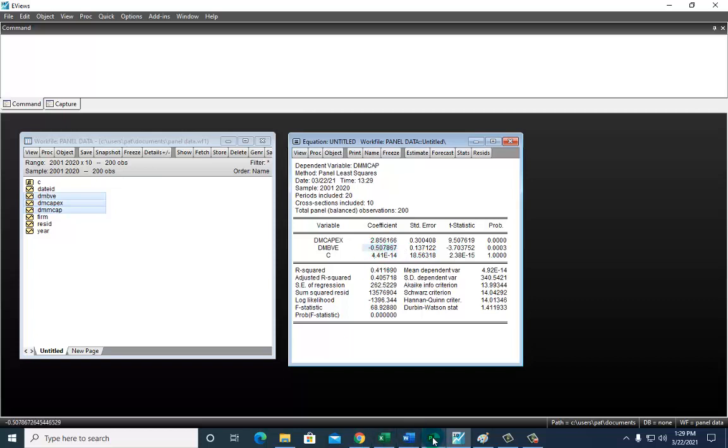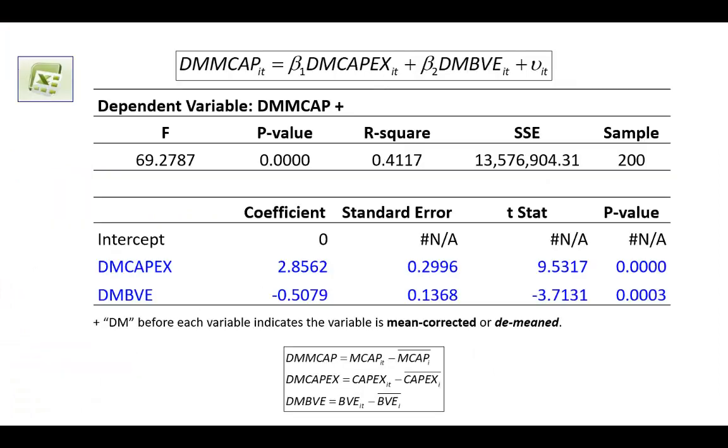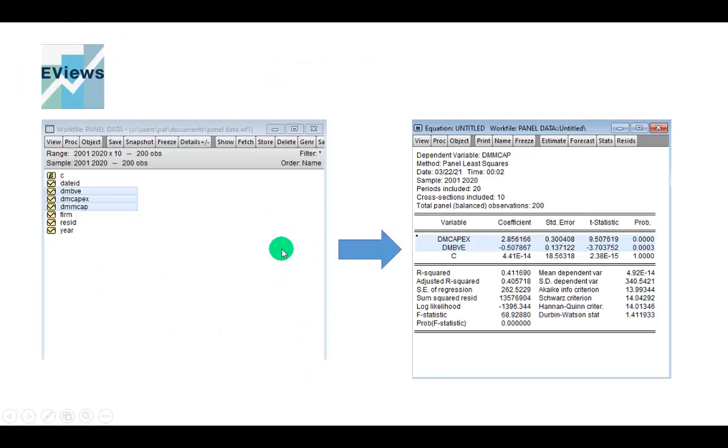Let's go ahead and summarize all of this on my PowerPoint. Starting right here. So this is the output on Excel. And going forward, this is the operation on EViews with the output that you just saw.